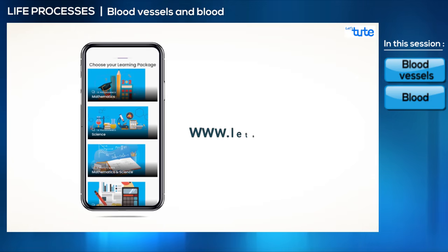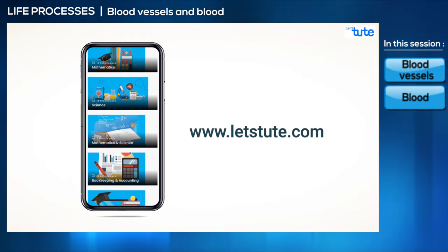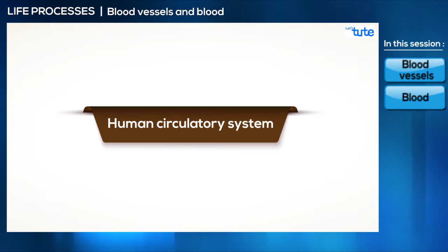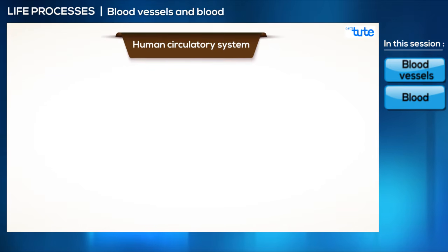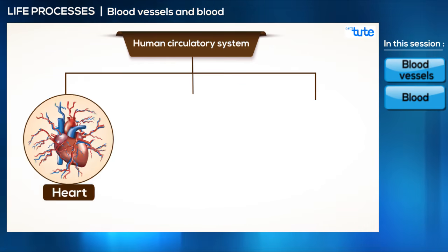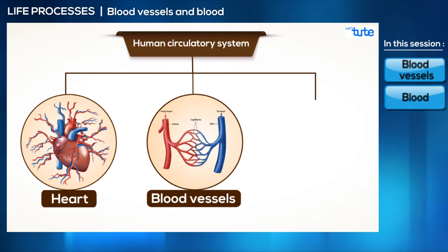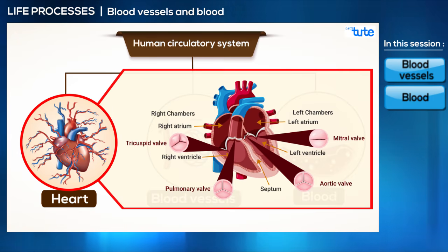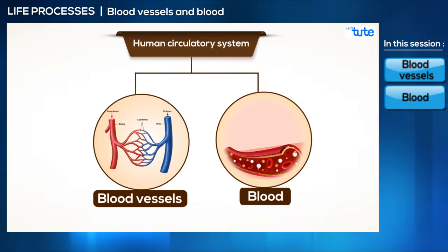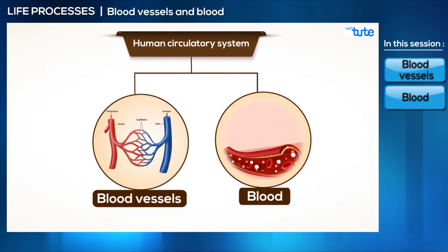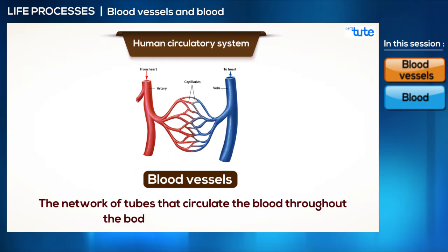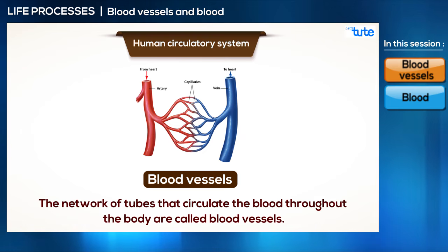So let's start with today's session. We started off with the human circulatory system and its three components: the pumping organ heart, the network of tubes called blood vessels, and blood. In our previous session we studied about the heart in detail. In today's session, let's learn more about the other components — the network of tubes that circulate the blood throughout the body, called blood vessels.